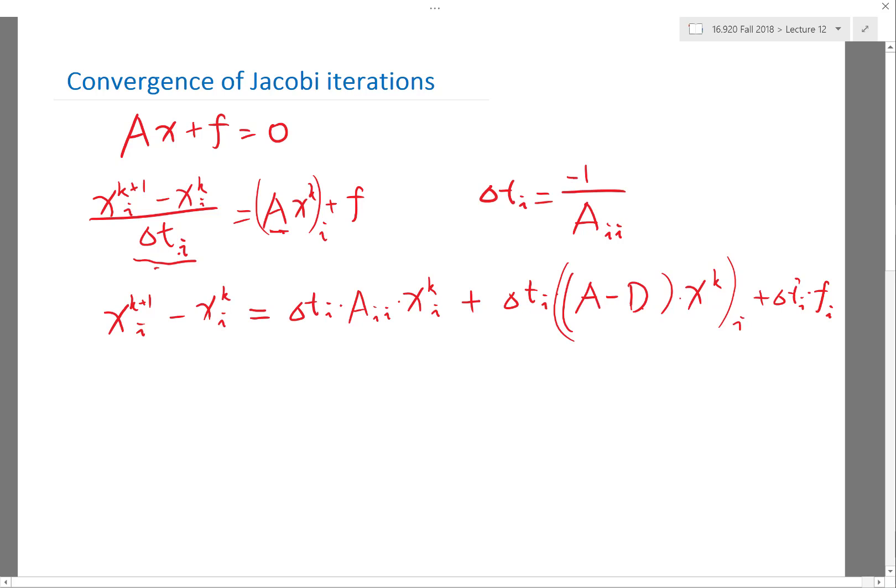Right. So essentially what I'm doing is I'm splitting the matrix A into diagonal entries plus an off-diagonal entry. The diagonal entry is going to be cancelled out because delta t_i multiplied by a_ii is exactly minus 1. So this and this are going to be cancelled out.